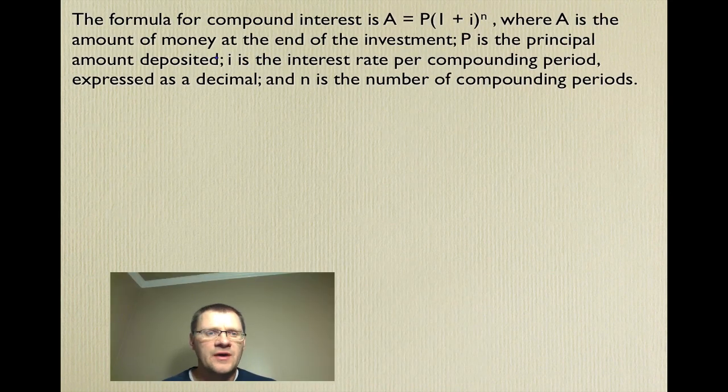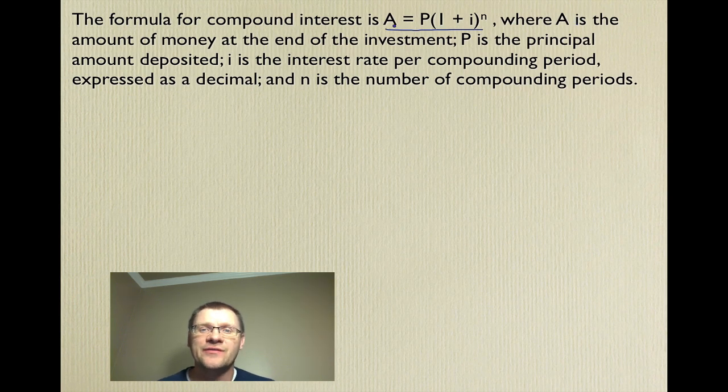And our final example. It says the formula for compound interest is A equals P times 1 plus i to the power of n. So that's an important formula you might want to write on your formula sheet. Where A is the amount of money at the end of the investment, P is the principal amount deposited, i is the interest rate per compounding period expressed as a decimal, and n is the number of compounding periods, which just means n is the number of times that they calculate your interest.